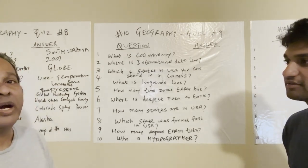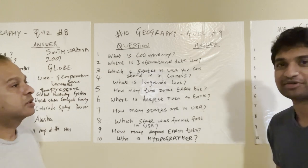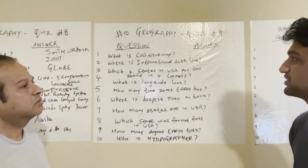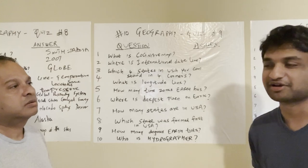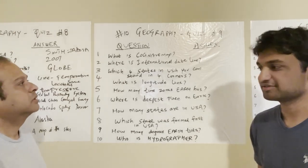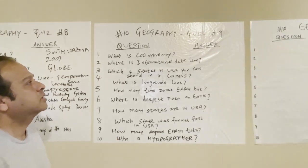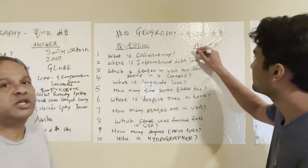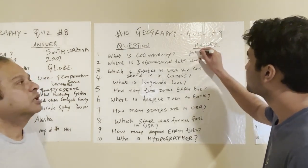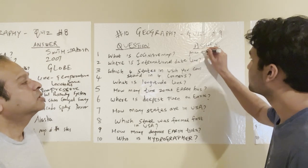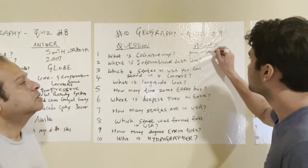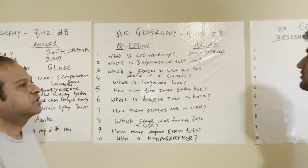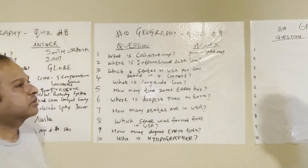What is a cognitive map? A cognitive map is a map of a person's spatial understanding of the locations around them. It's called a cognitive map — cognition means knowledge. It's a person's position in space.